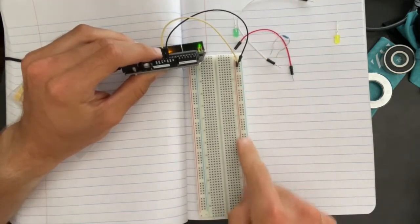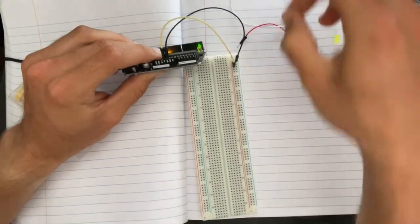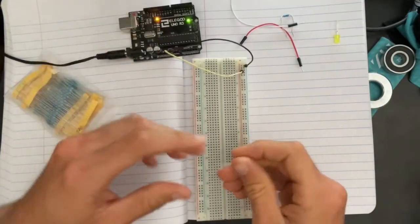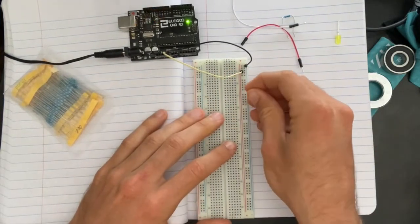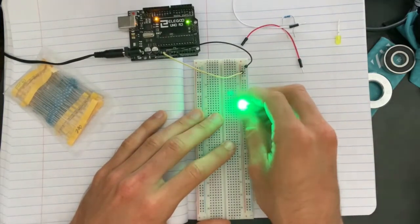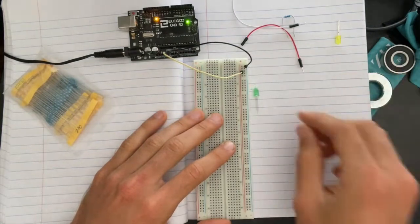Now everywhere along this column there's that 5 volt potential difference coming from our Arduino. So all I have to do is take my LED just like this and connect it in just like that, and we see this guy turning on and that's pretty cool.